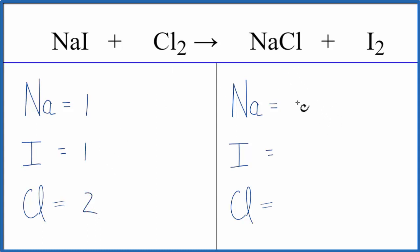On the product side of the equation, we have one sodium, two iodines, and one chlorine atom.